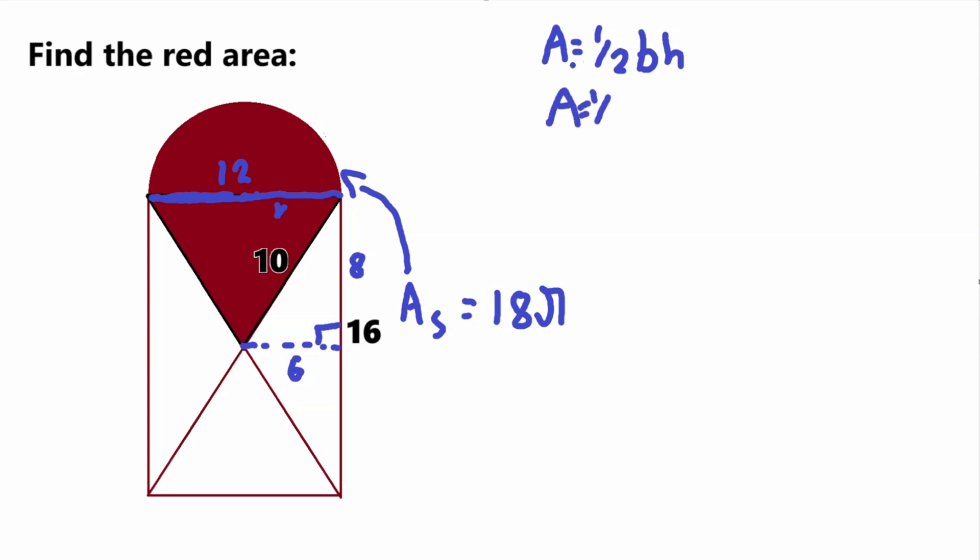So that is our base value. The area of the triangle is equal to one-half times 12, and then our height is, we already figured this out, our height goes like this, and this is equivalent to the half of this side length of the rectangle, which we figured out to be 8. So the area of our triangle is equal to one-half times 12, which is equal to 6 times 8. 6 times 8 is equal to 48.